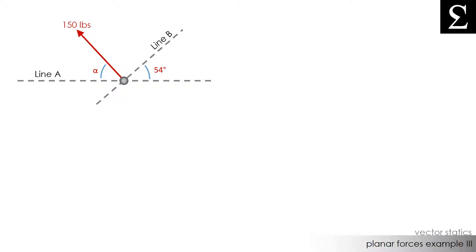We want to find two things here. First, the value of angle alpha, and second, the component of our 150 pound force acting along line B if we already know that the component along line A has a magnitude of 100 pounds.